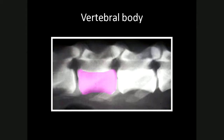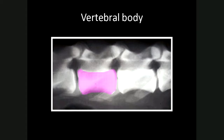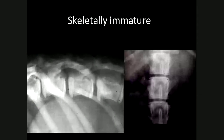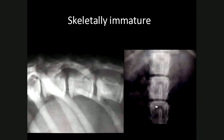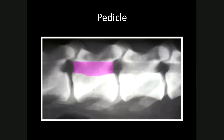The vertebral body is the cylindrical and bulkiest part of the vertebra. In immature animals, at the cranial and caudal end plates, a radiolucent physis will be demonstrated. In this skeletally immature patient, radiolucent lines seen cranially and caudally on both the lateral and VD views are physeal lines. They are radiolucent because they're composed of physeal cartilage, which is not visible on a radiograph as an opaque structure.